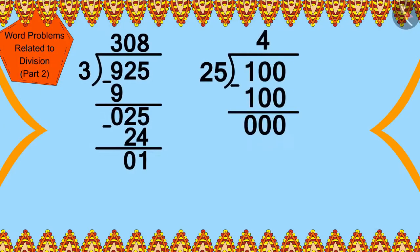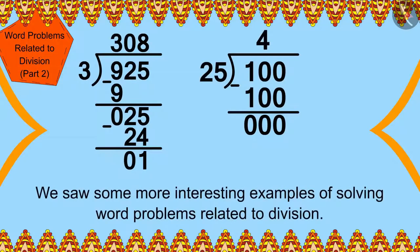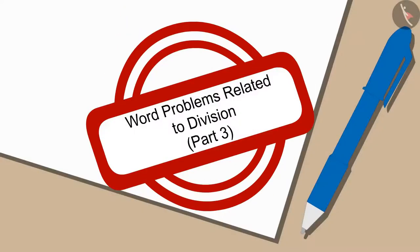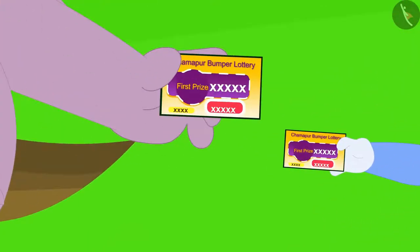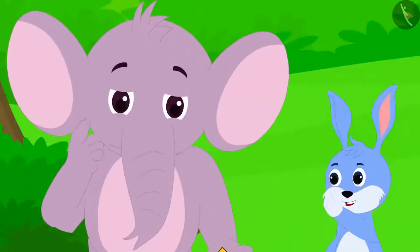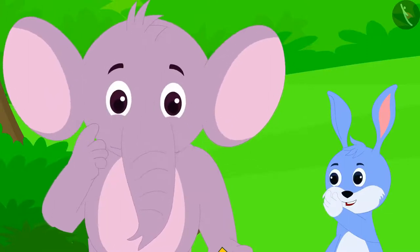Hello kids! In the previous video we saw some more interesting examples of solving word problems related to division. In this video we will learn to solve some more interesting word puzzles related to division. Bunny and Appu bought lottery tickets, and they thought that if any of them won the lottery they would distribute the winning amount among the needy villagers.